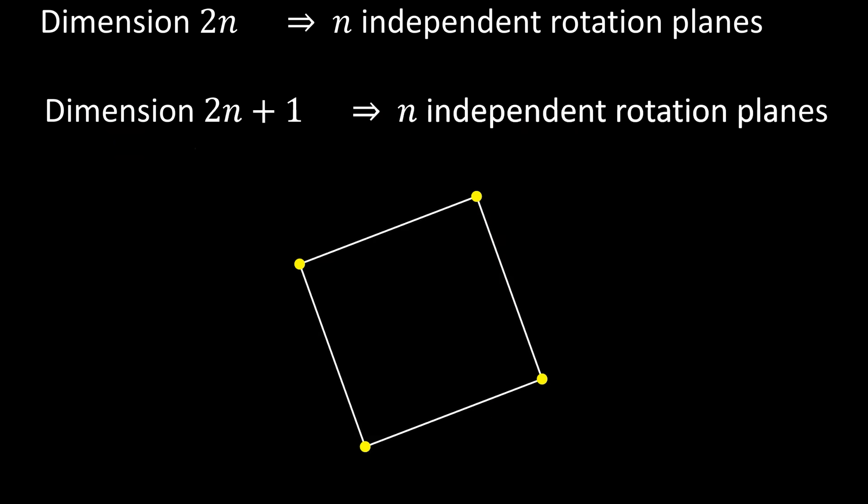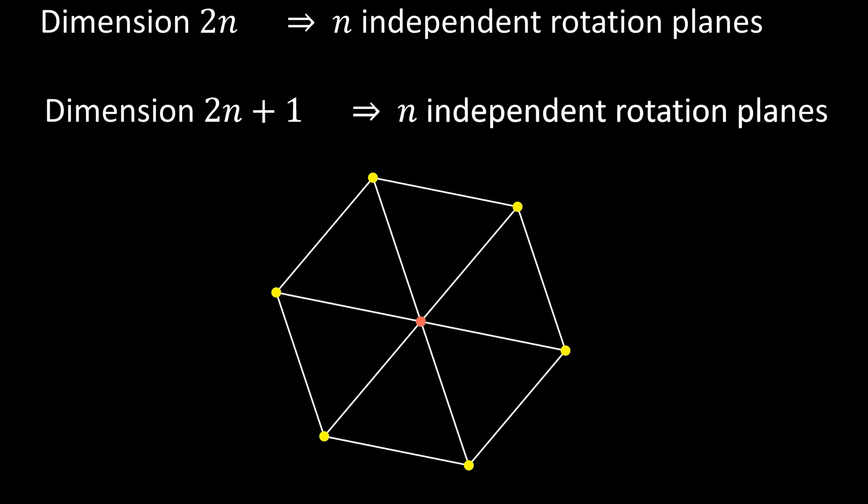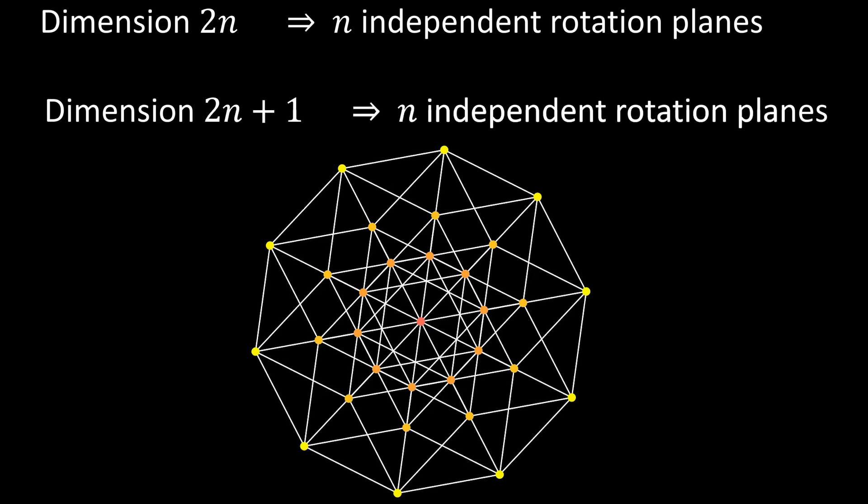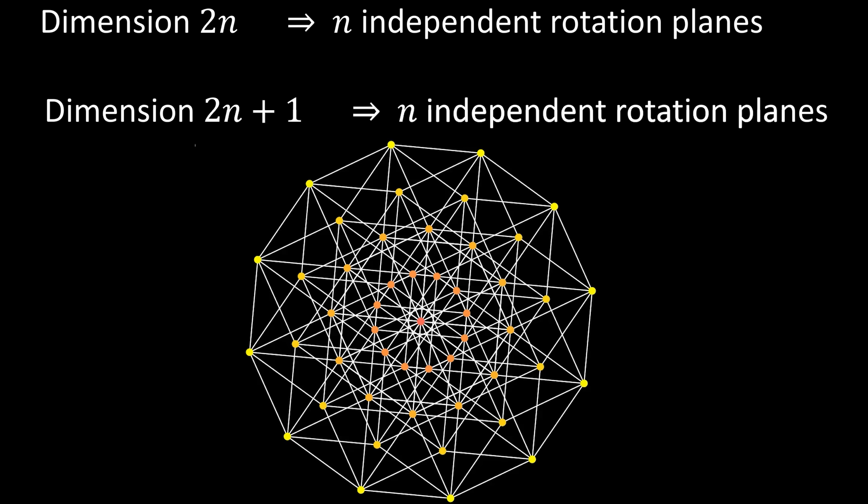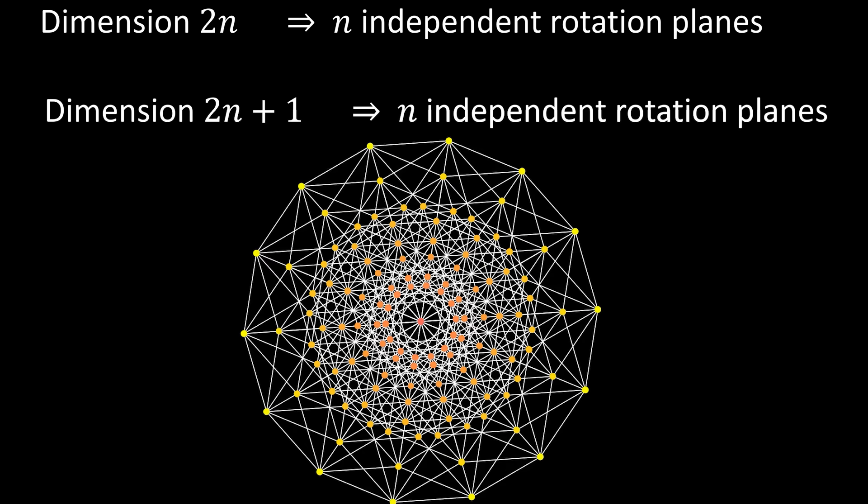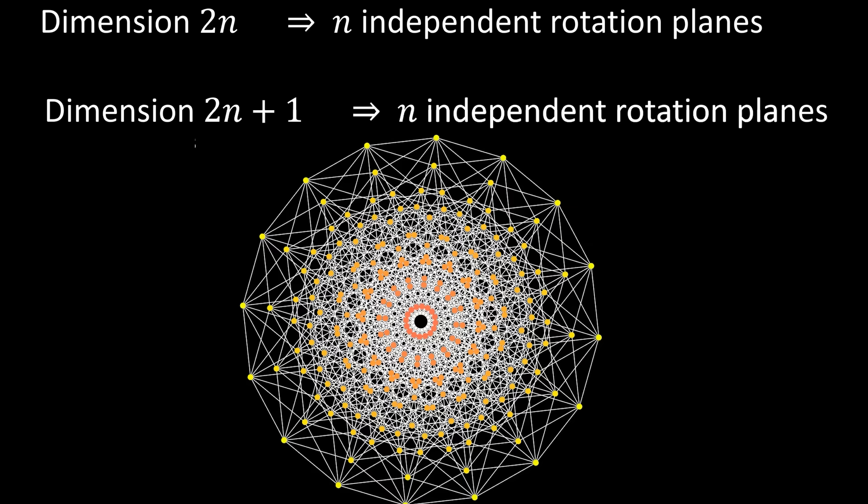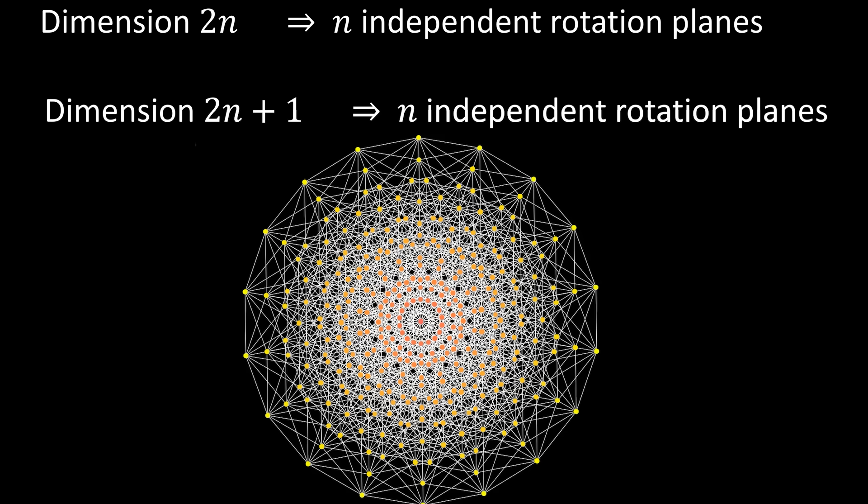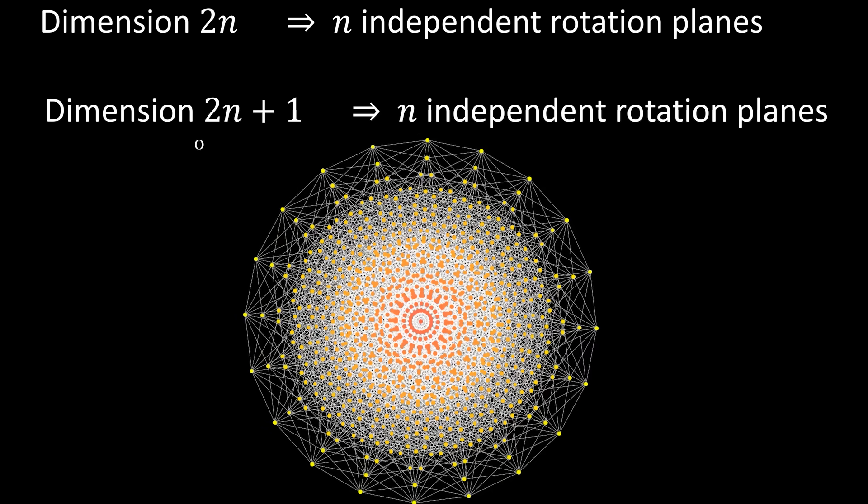And in general, for even dimensions, like two n dimensions, you can rotate in n different directions independently. But in two n plus one dimensions, so an odd number, you still only get the n different dimensions independently, because you need two more dimensions to get a new plane of rotation, not just one.